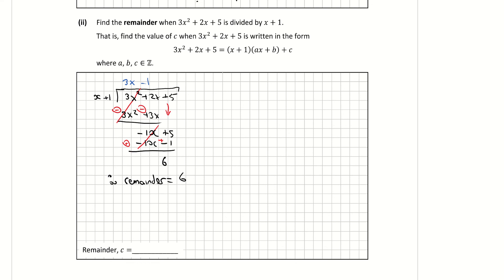And if we go back up to the question here, it says, that is, find the value of c when the following is written in this form. I just want to check if that's true. So my answer here, remainder is 6, but I want to check this part here. First thing I'm going to do is, if you look at this one, x + 1, that's this.